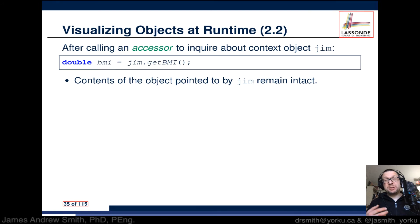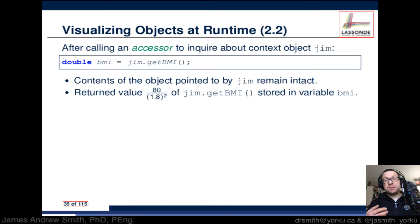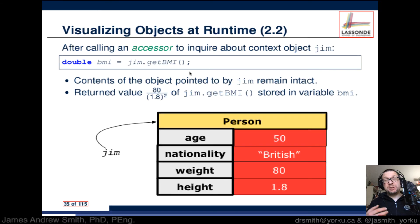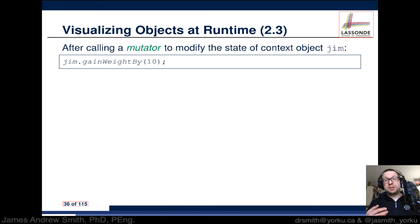The contents of the object pointed to by jim remain intact — we're simply inquiring into the value, not modifying it inside the object. The getBMI method does a calculation: it takes Jim's weight of 80 kilograms and divides it by the square of his height, 1.8 meters. The result is stored in the variable bmi. After this operation, nothing has actually changed about the Jim object.